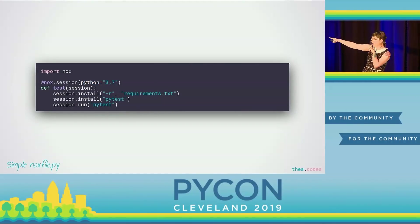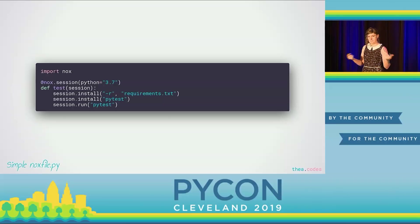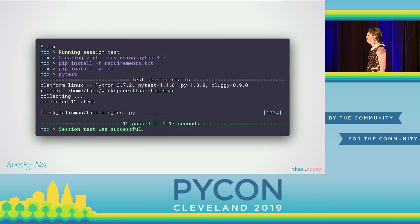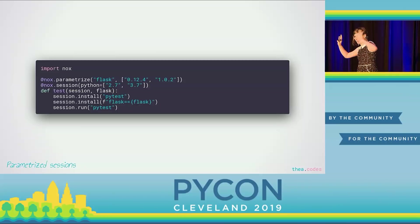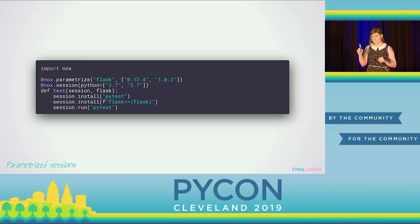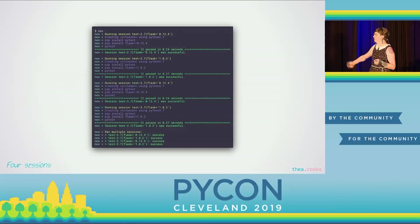This is a simple Nox file. If you've used Flask's use of decorators to define view functions, it's very similar to that. We have a Nox session, and this session does the same thing we did with Tox before — it creates a virtual environment, installs requirements, runs pytest. It's pretty much the same stuff, easy peasy. Just like Tox, Nox can handle the whole matrix thing of testing multiple versions of dependencies and different Python interpreter versions. Nox calls this parameterization — it borrowed that term from pytest. If you're familiar with pytest's parameterization, you'll be right at home with this.